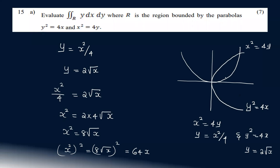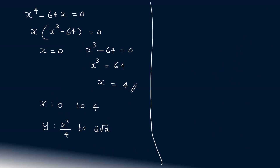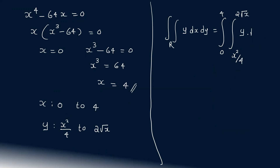So x ranges from 0 to 4. The y limits are from x²/4 to 2√x. The double integral becomes: integral from 0 to 4, integral from x²/4 to 2√x of y dy dx.